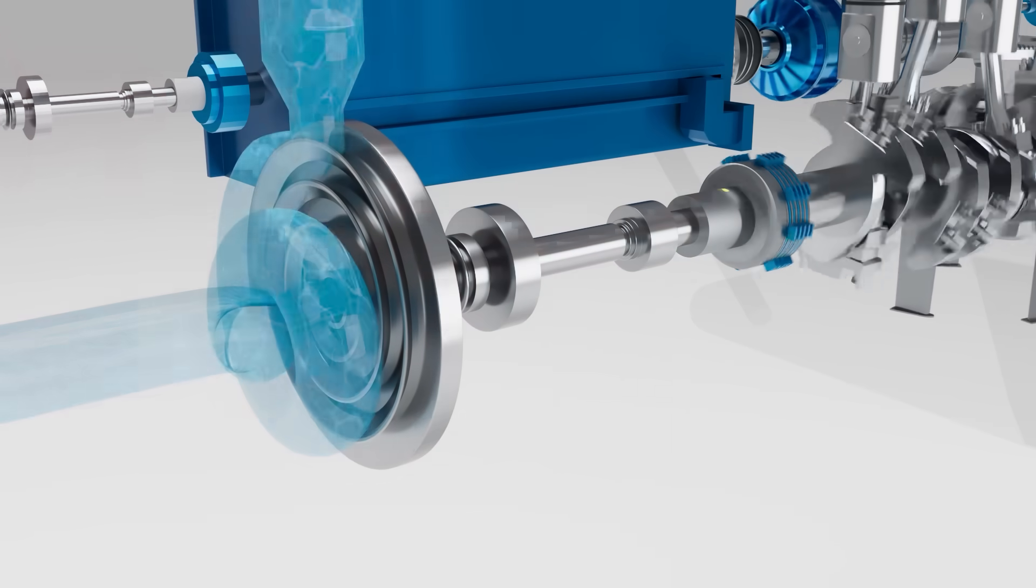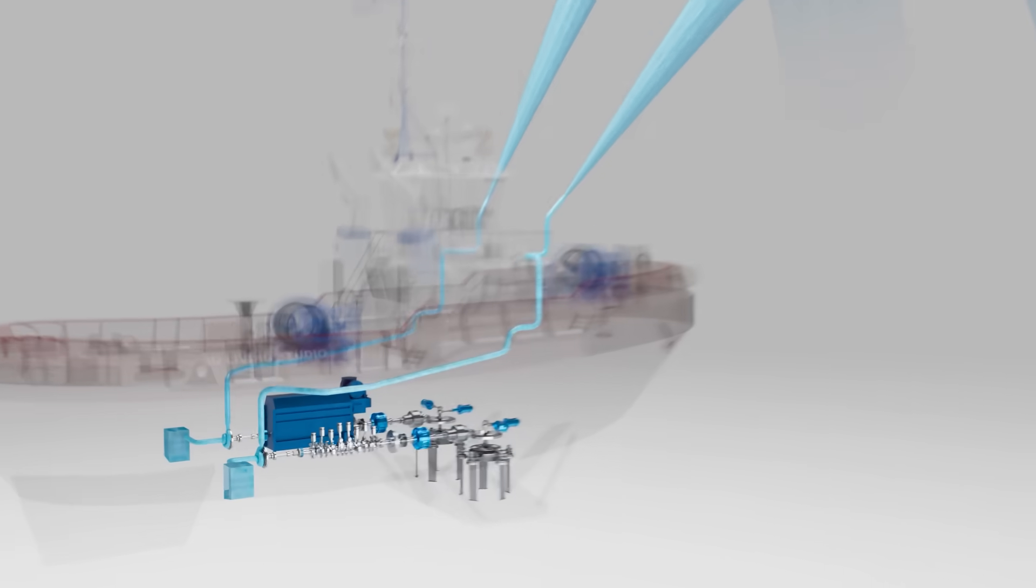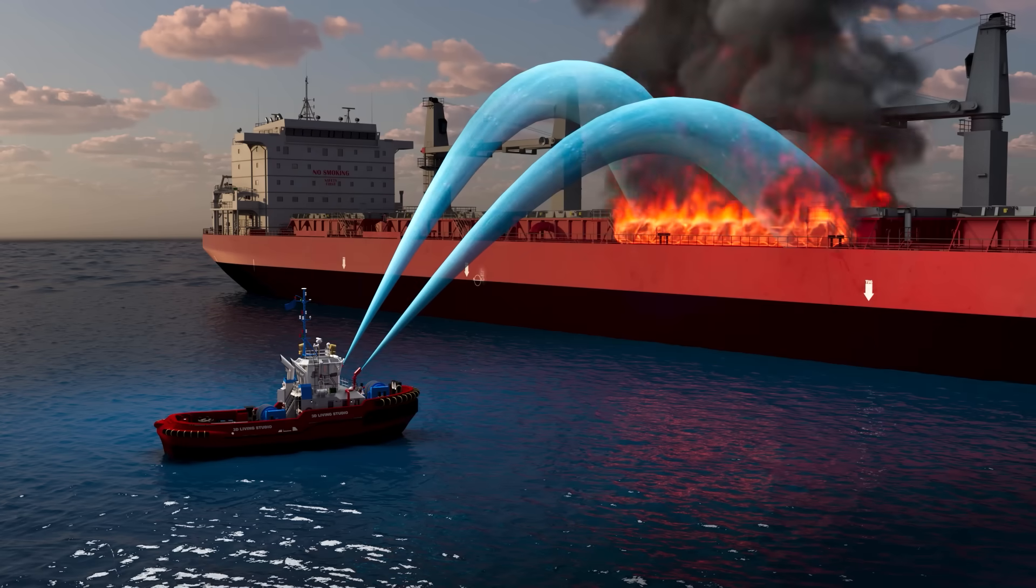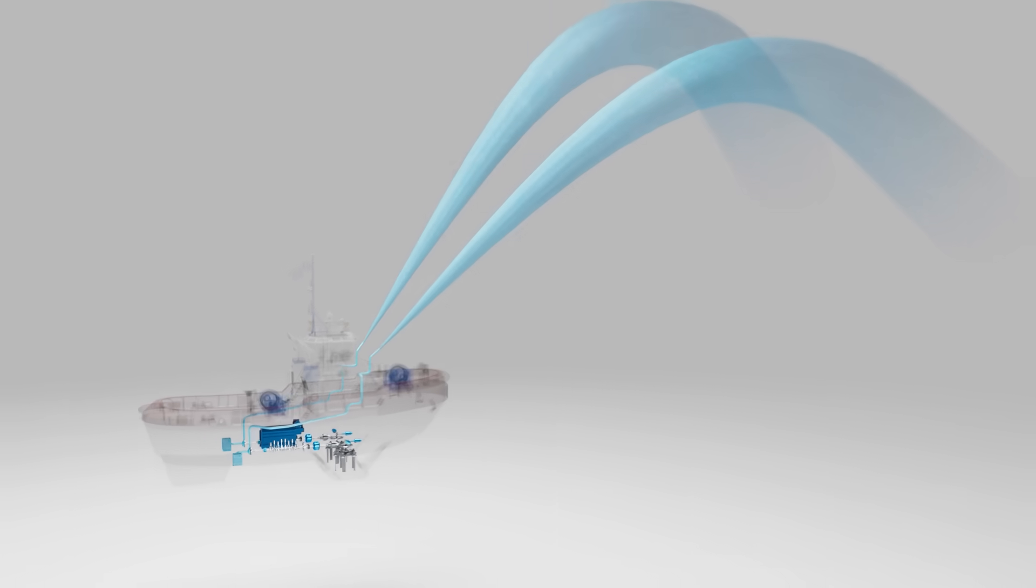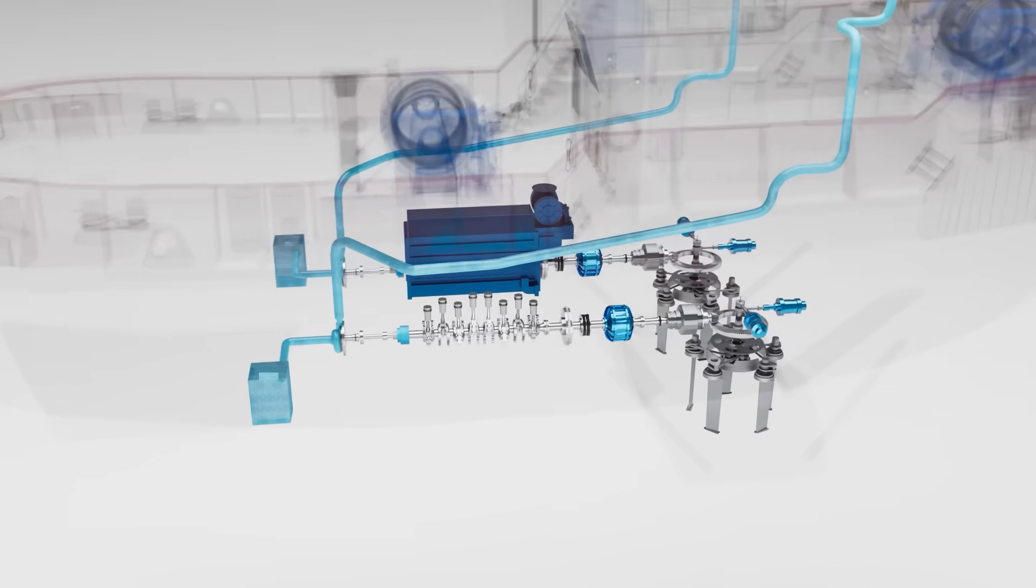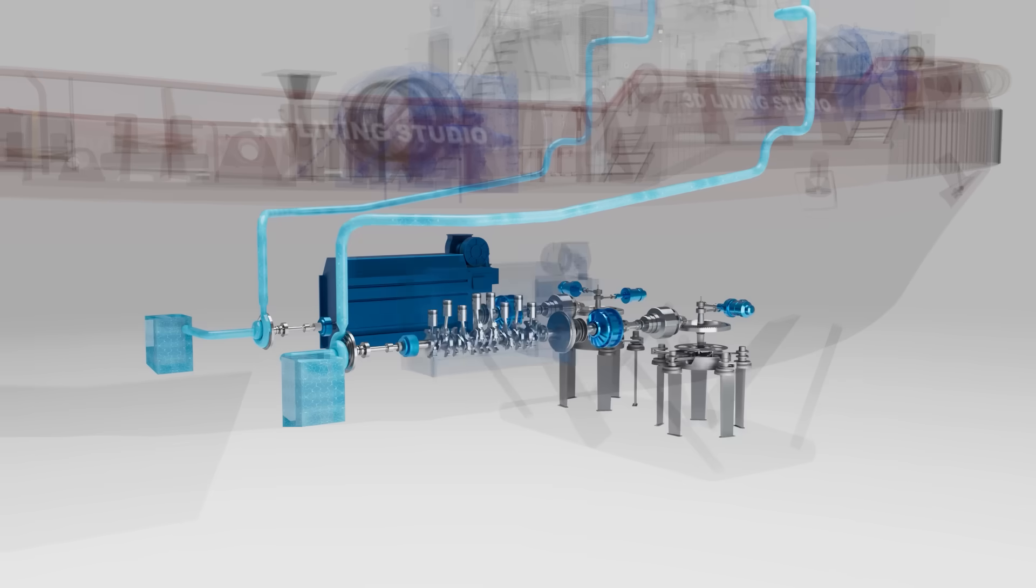Water is then drawn from the sea chest and sent at high pressure to the fire monitors on deck. During a firefighting mission, up to 30% of the power normally going to the Voith Schneider propellers is diverted to the fire pump. This sharing of the power slightly reduces propulsion, but allows the tug to fight fires effectively.